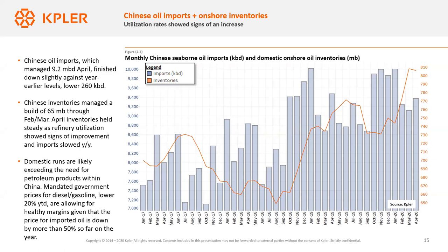It is important to note that the increase in refinery utilization — which you will see reported elsewhere — has ticked up in China significantly, but this is not necessarily being driven by market factors. The mandated price for diesel and gasoline within China is lower by about 20% year to date, which does not come near matching the declines for imported oil barrels into China, which are down by more than 50%. This is incentivizing product production — that's a pretty healthy margin. But that doesn't mean there is an equally large increase in domestic demand, so it is likely that the clean product oversupply question could be exacerbated by Chinese refiners in the weeks and months ahead.